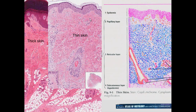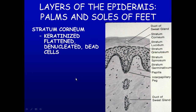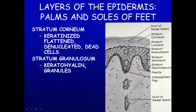In thin skin we can see a similar arrangement. The papillary layer is not as elaborate in thin skin as it is in thick skin, and then you have the reticular layer. Regardless of which type of skin we have, we have multiple layers. The top layer on the outside — dry, composed of dead, denucleated, flattened cells — is the stratum corneum. Below the stratum corneum is the stratum lucidum, and then the next layer that actually has cells in it is the stratum granulosum.